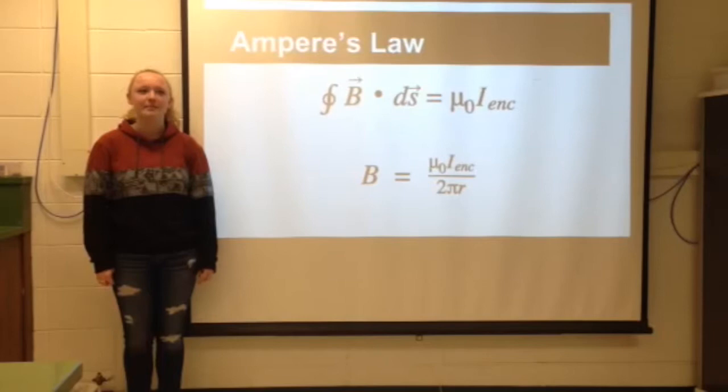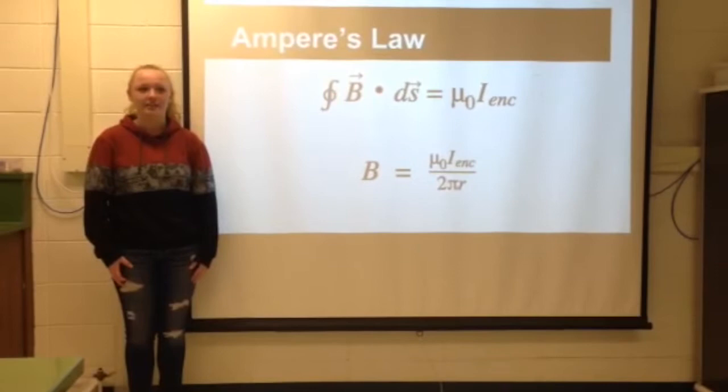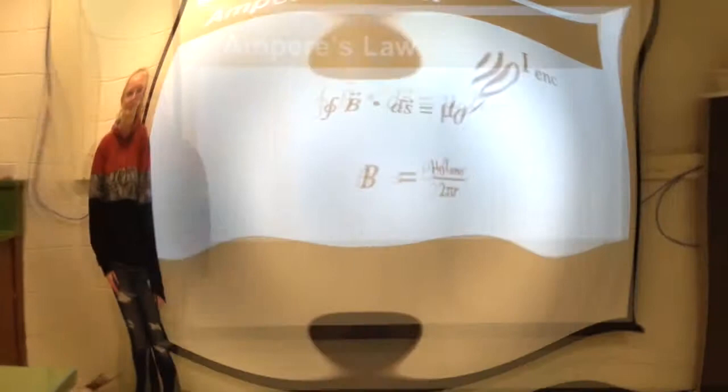This equation can be used to solve for the magnetic field, where the magnetic field is equal to the permeability constant multiplied by the enclosed current divided by the circumference of a circle. This means that the magnetic field strength increases if the current increases, but it decreases if the radius increases.